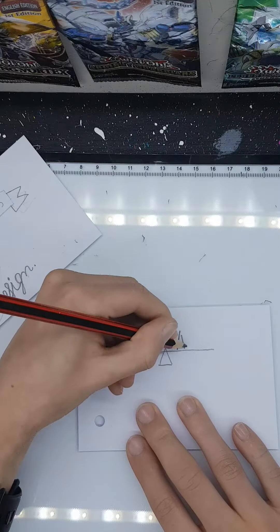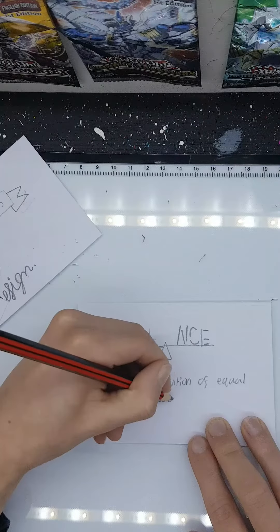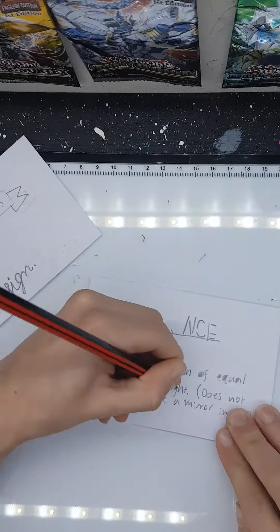Balance is a distribution of equal visual weight. Please take note that it doesn't have to be a mirrored image.